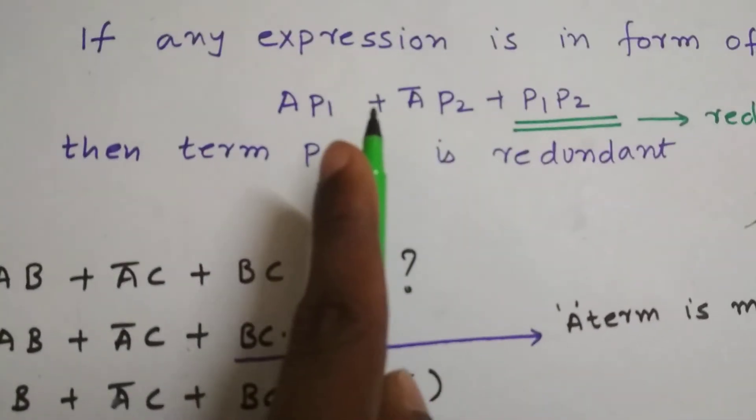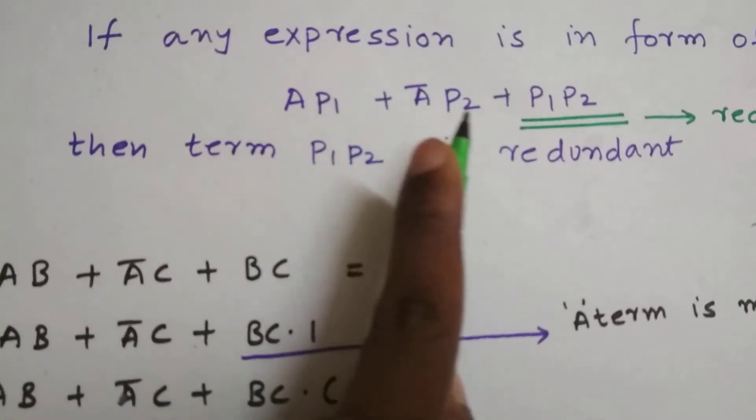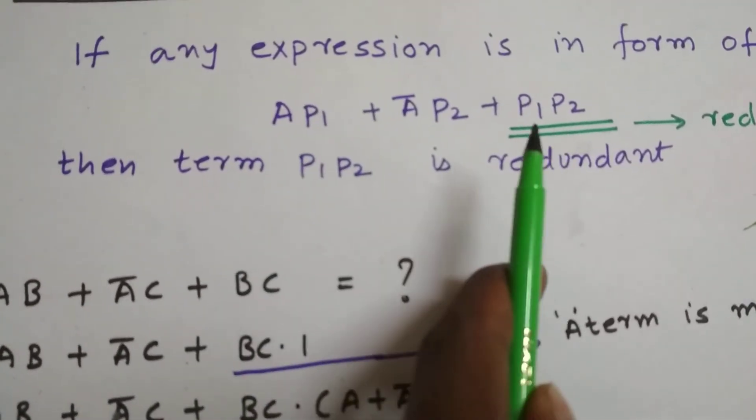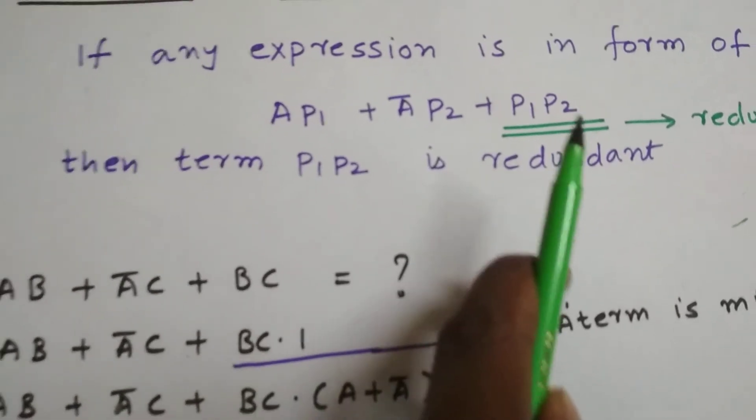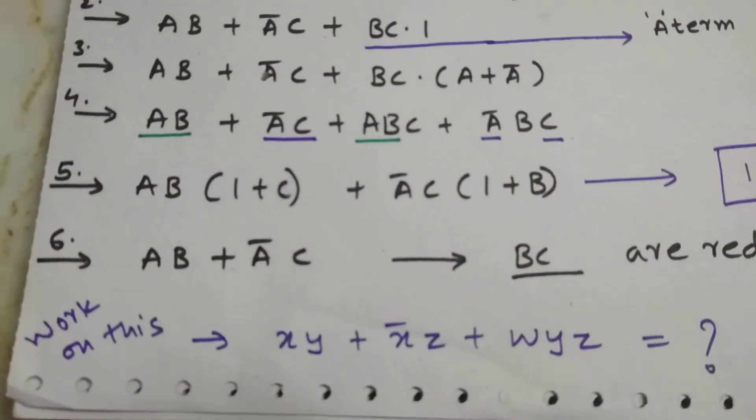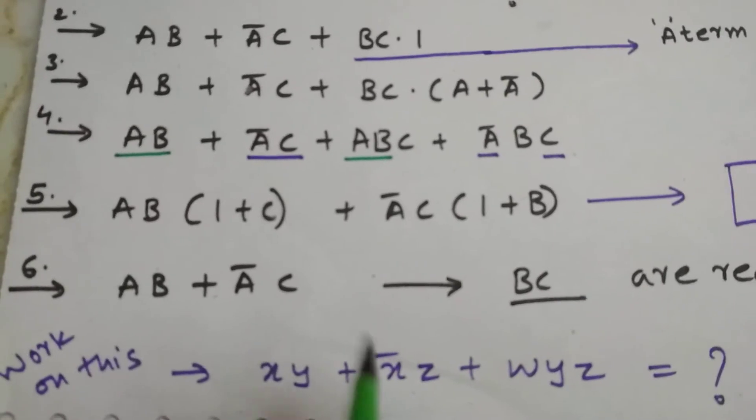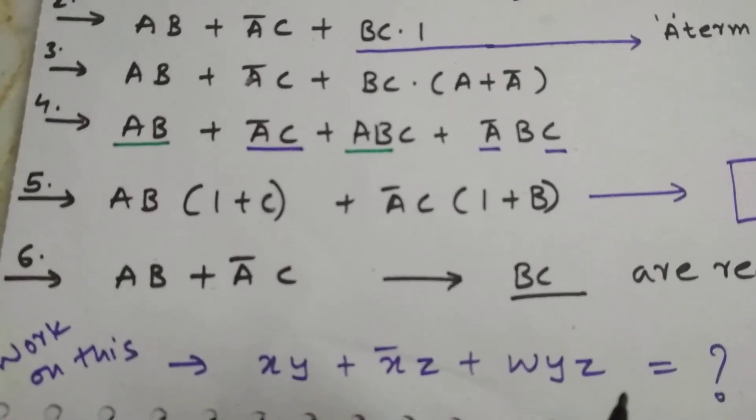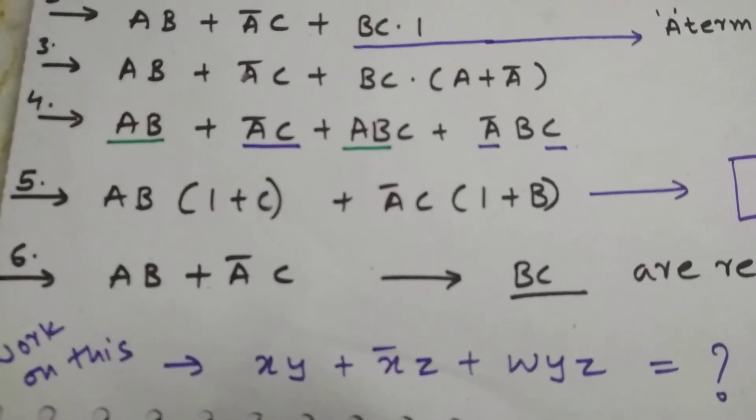So we can see that any expression has this A and negation of anything, we can remove the terms which are there in P1 and P2 over here. So I want to give you a small work. Can you say me the answer in the comments? I will reply to your comments and thanks for watching.